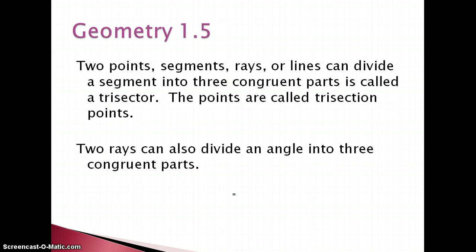Two points, segments, rays, or lines can divide a segment into three congruent parts, which is called a trisector. Tri means three and sect means to cut. The points are called trisection points. So very similar, except we call them trisection instead of midpoint because tri doesn't really translate as well as midpoint does. Two rays can also divide an angle into three congruent parts. Those should be angle trisectors.